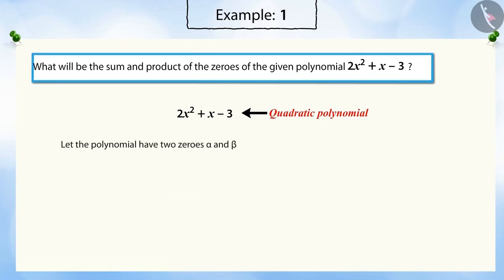Let's assume the polynomial has two zeros, alpha and beta. In the previous video, we learned that the sum of the zeros of the quadratic polynomial is the negative ratio of the coefficient of x to the coefficient of x squared. Substituting the values of the coefficients of x and x squared gives the sum of the zeros as minus 1 by 2.